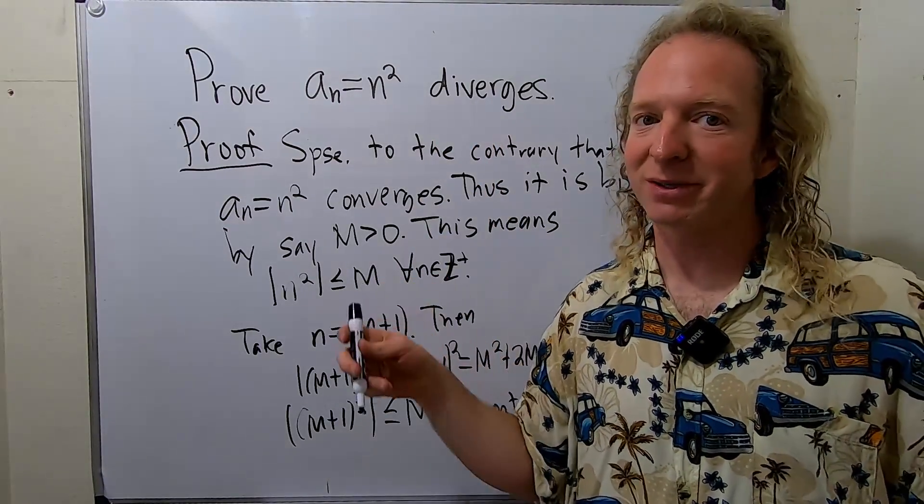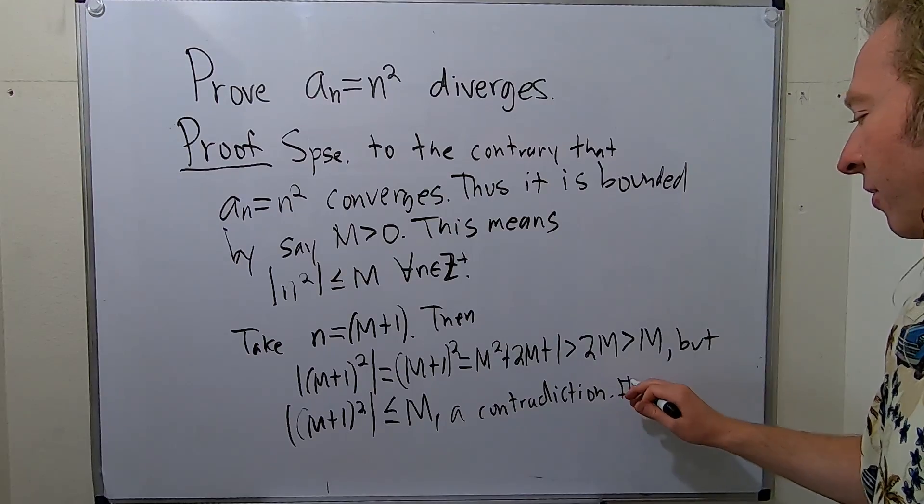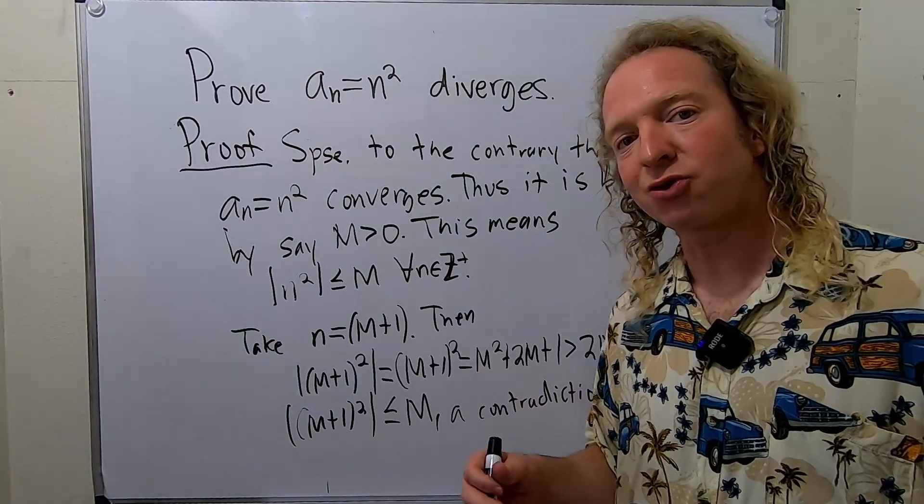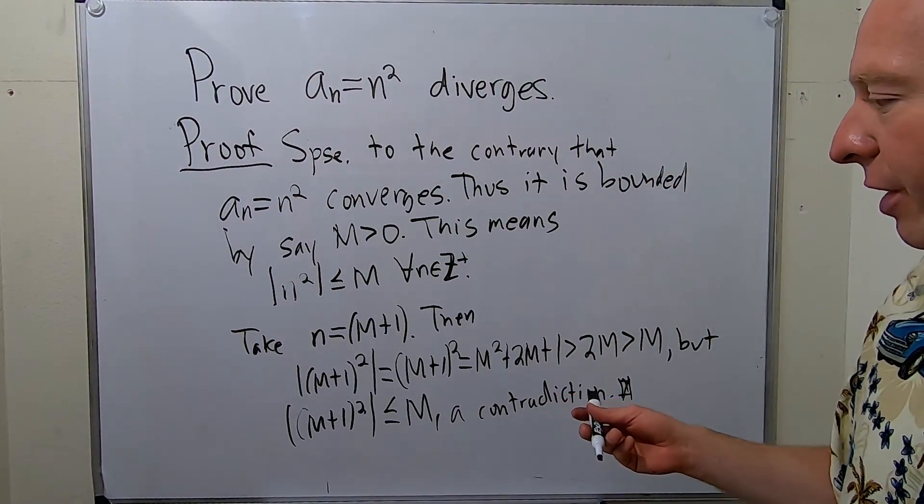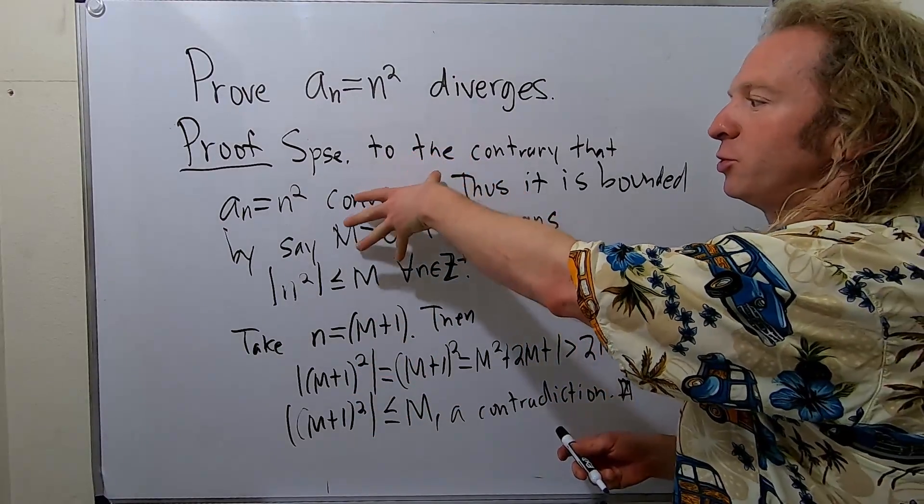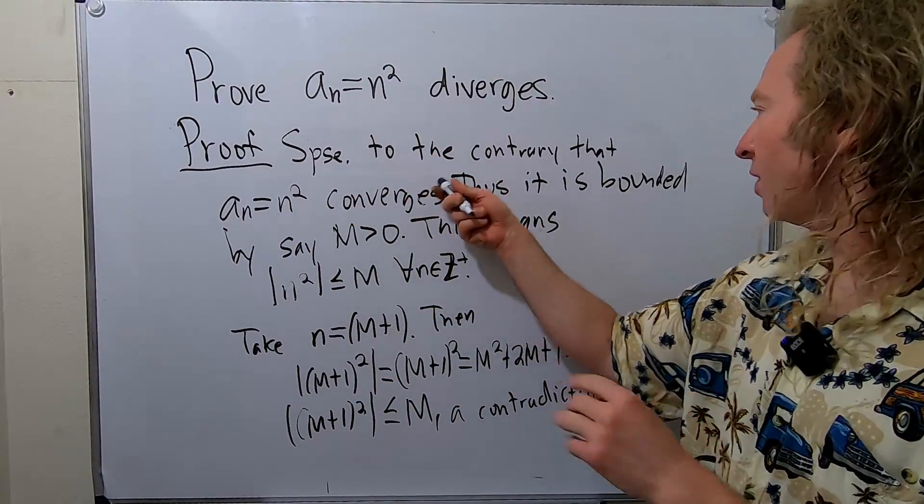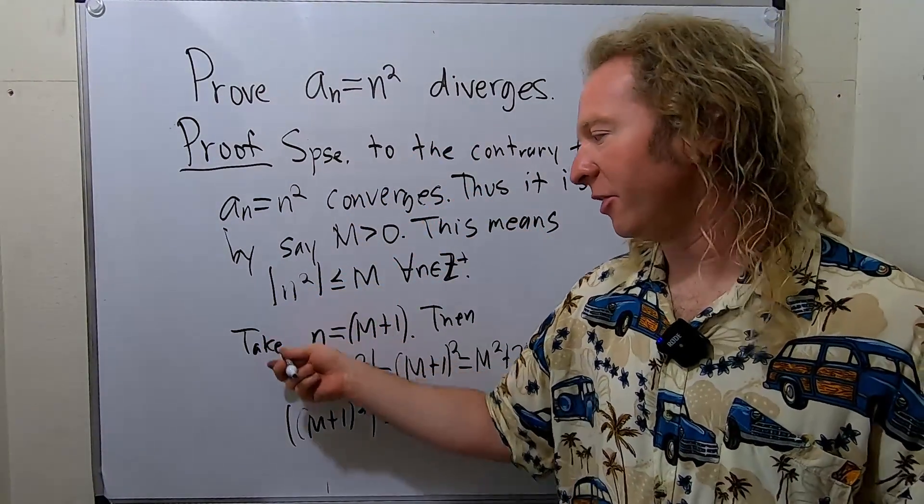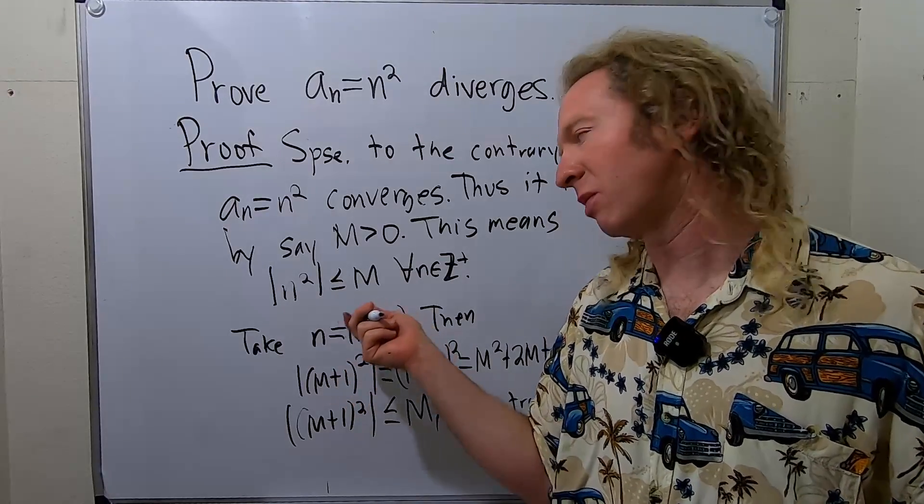So therefore, our sequence must diverge. I hope this video has been helpful to someone out there who's trying to learn how to do proofs by contradiction. So again, you assume it converges, therefore it's bounded. And here you have to strategically pick something. I just went with M+1.